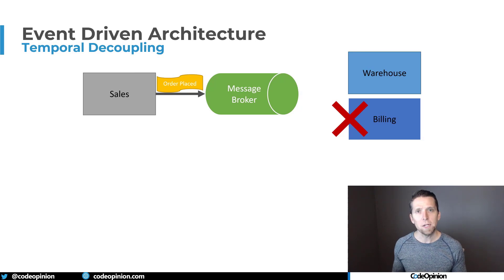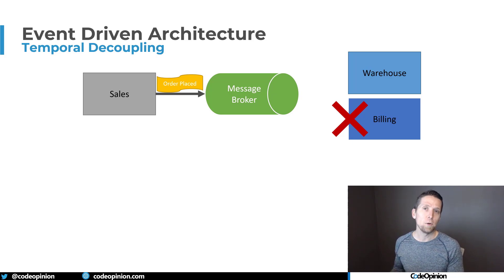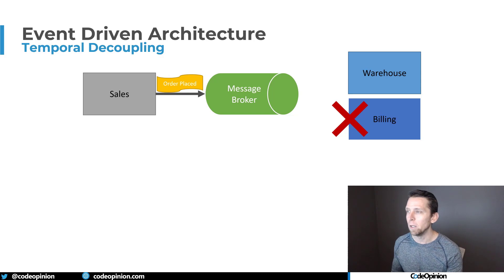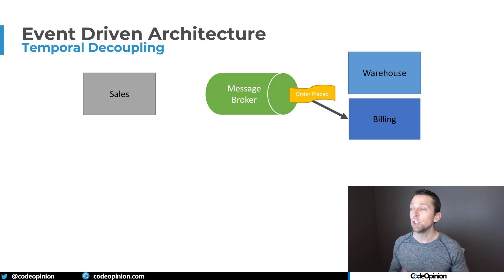We remove that temporal coupling because billing doesn't actually need to be available for us to accept the order. We accept the order, publish the Order Placed event to the topic. If billing isn't available and can't consume that event, the workflow will pause — but it can continue once billing becomes available again. Once billing comes back online and consumes the event, the workflow continues; it publishes an event, warehouse picks it up, just like in the workflow example. By removing temporal coupling, you start treating your internal services just like external services. Before, everything had to be available and online to complete any workflow. With event-driven architecture, because everything is independent, not everything has to be available at the same time.